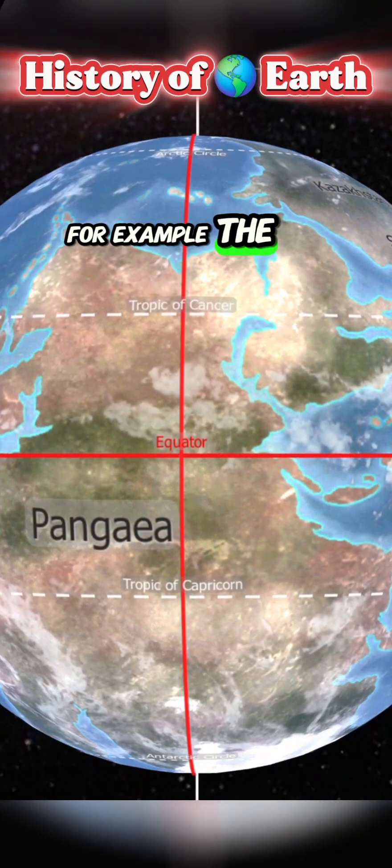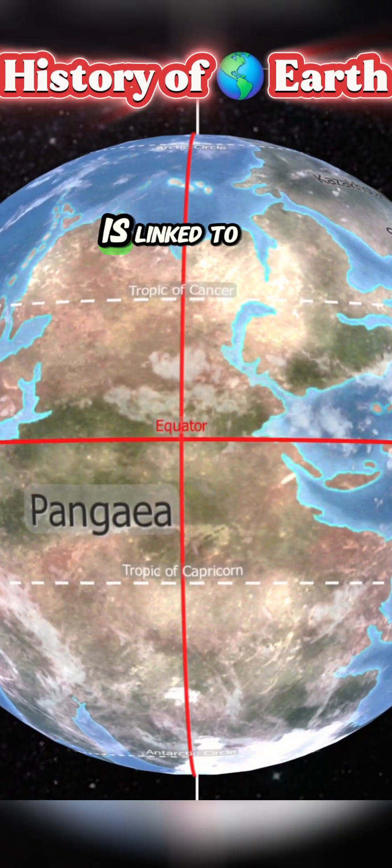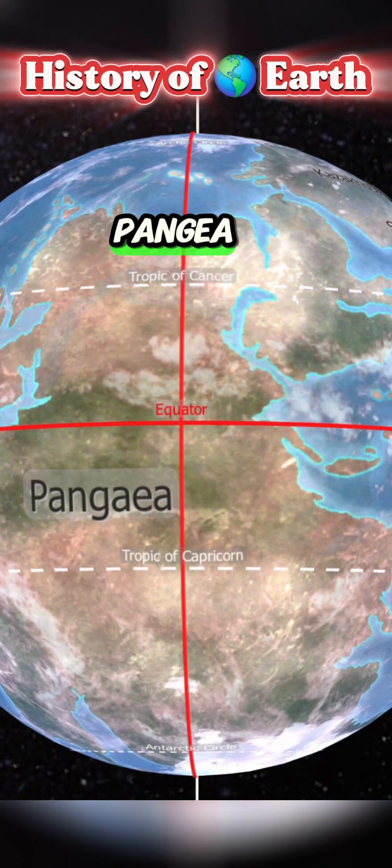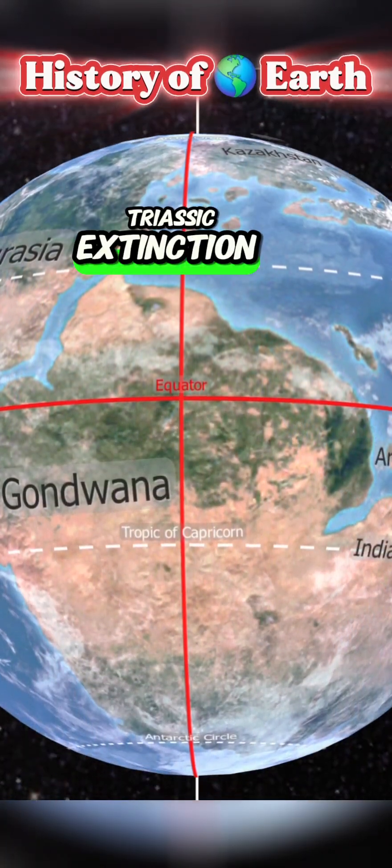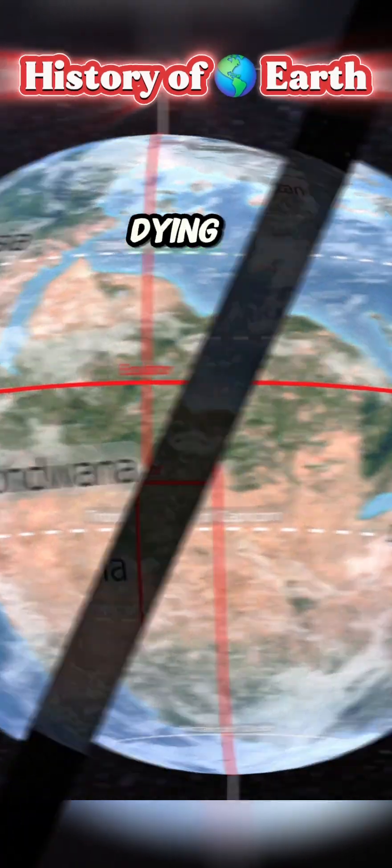For example, the end of the Paleozoic era is linked to the fragmentation of Pangaea and the Permian-Triassic extinction event, or the Great Dying.